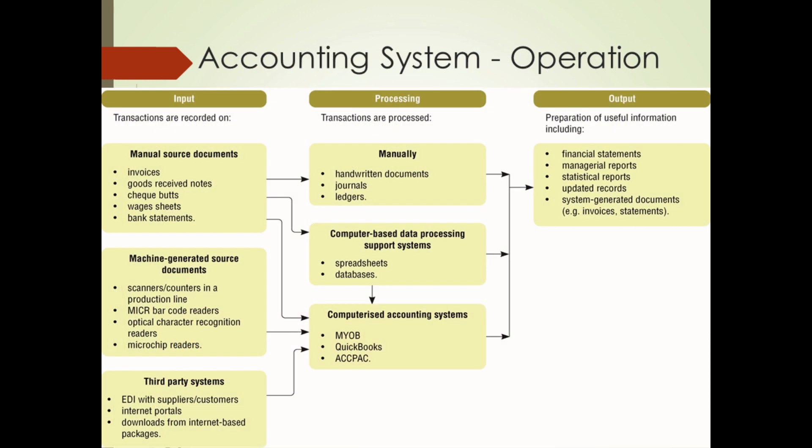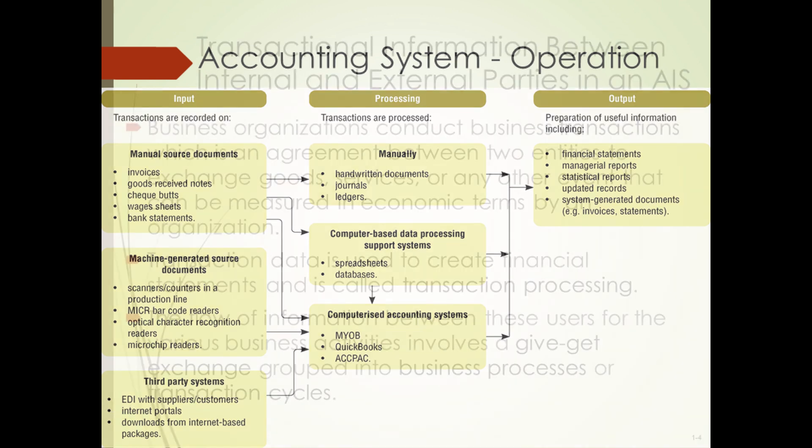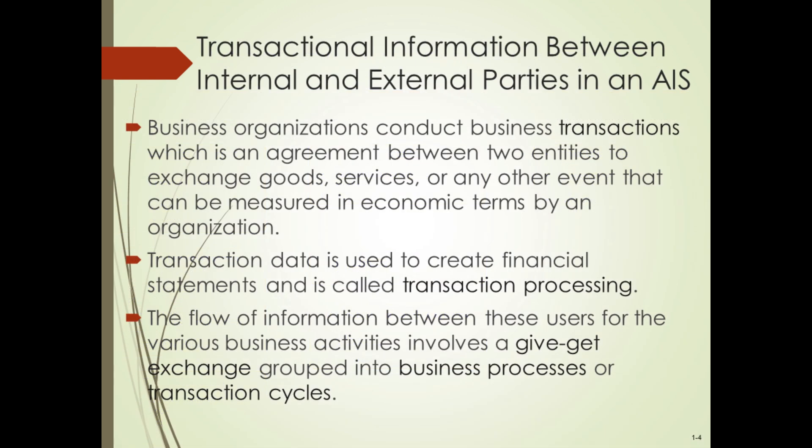To understand Accounting Information Systems, we should be able to identify and understand the business process. Business organizations use business processes to achieve their specific goals. The flow of information for various business activities involves the business process or transaction cycles.